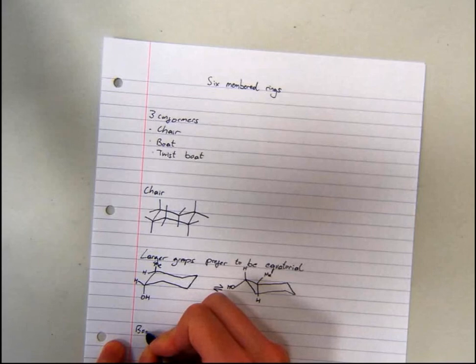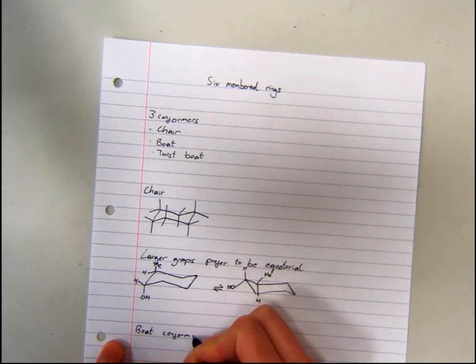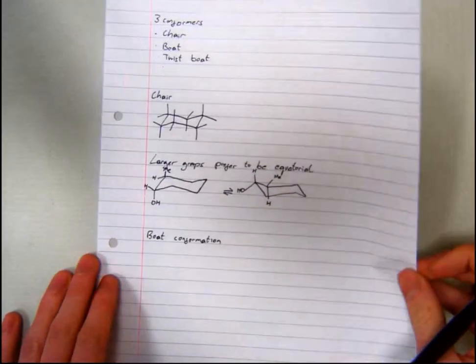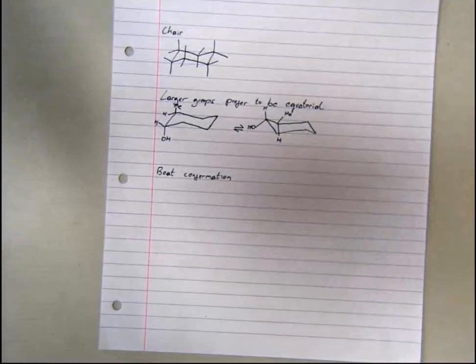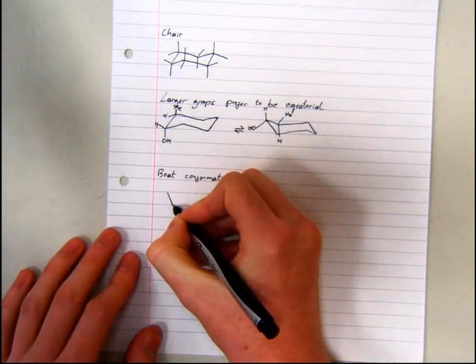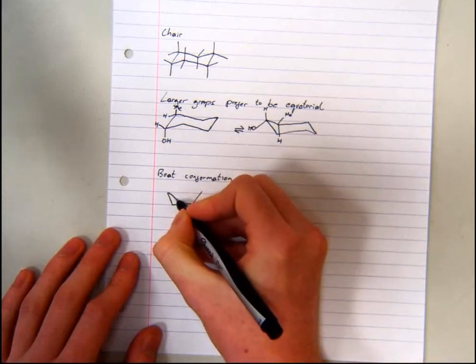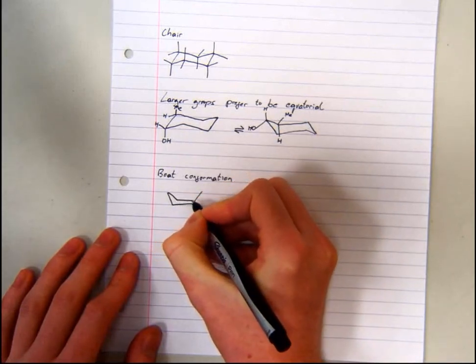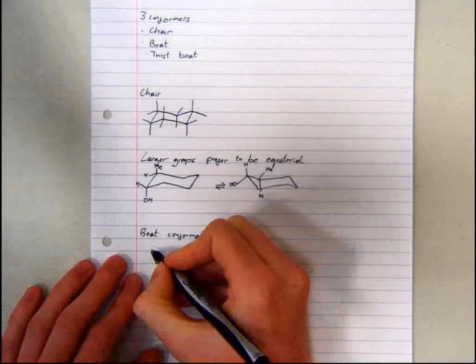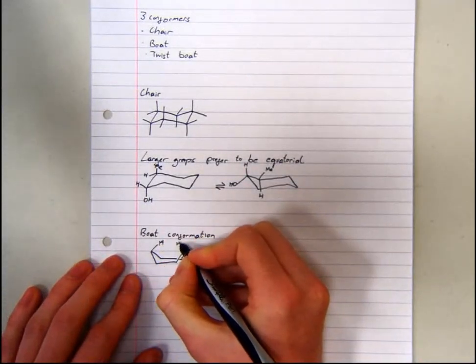Next, we'll look at the boat conformer. This could be drawn like this. This conformer is less stable than the chair, due to a series of interactions.